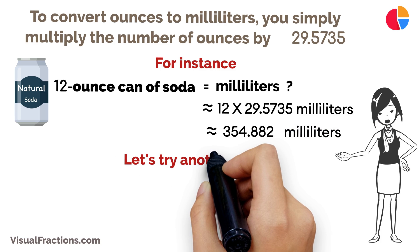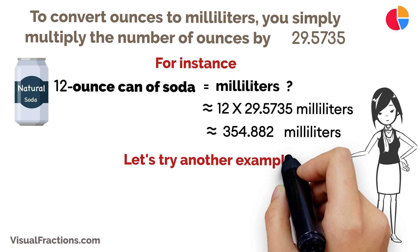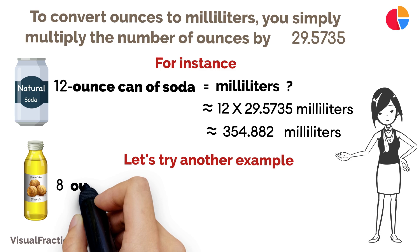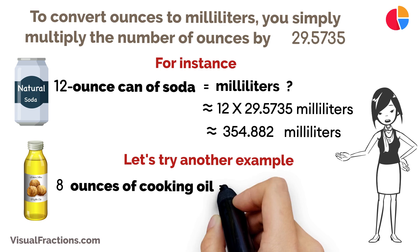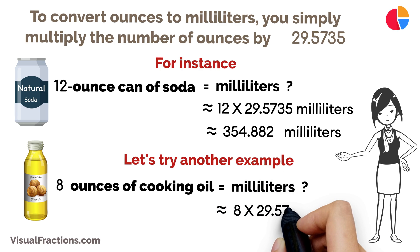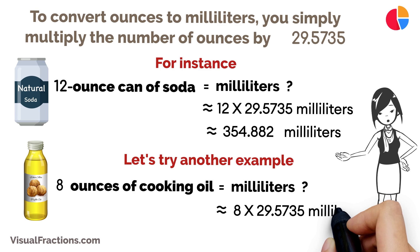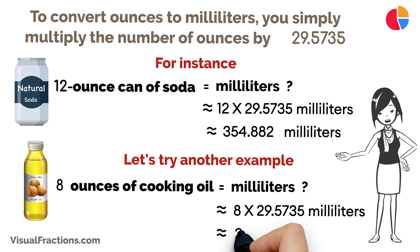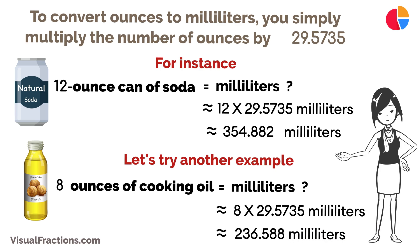Let's try another example. Suppose you have 8 ounces of cooking oil. To convert that to milliliters, you'd do the calculation of 8 ounces times 29.5735, which gives you about 236.588 milliliters.